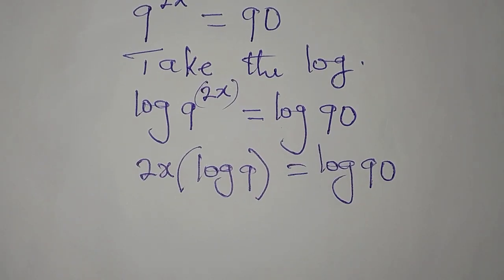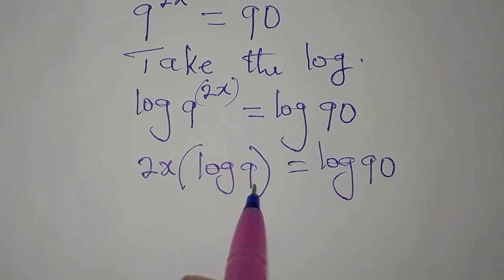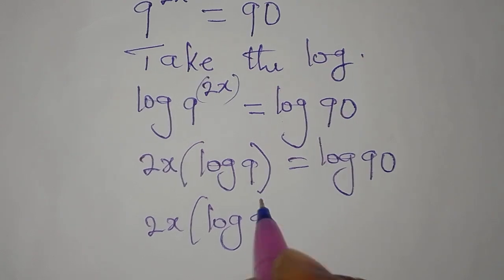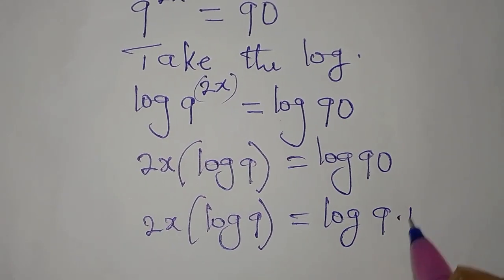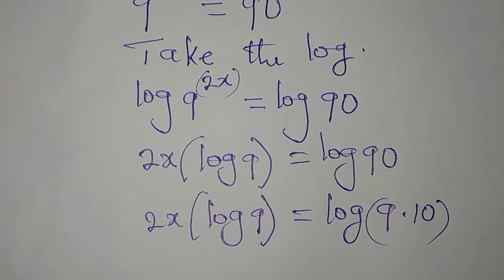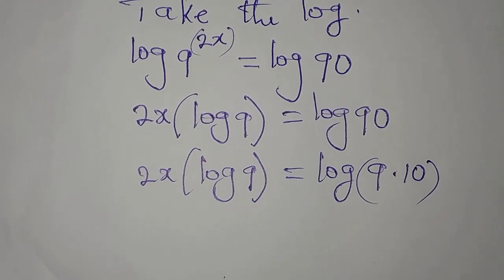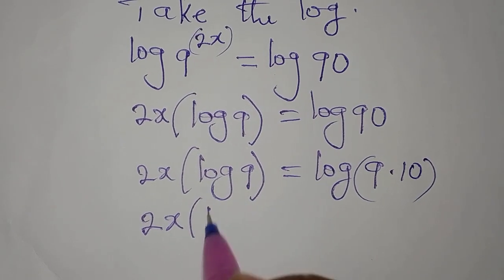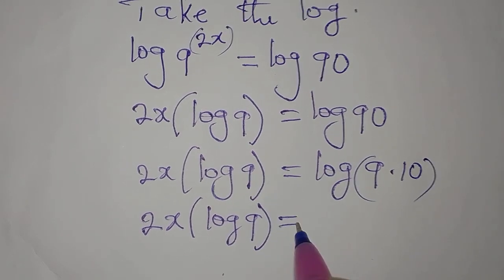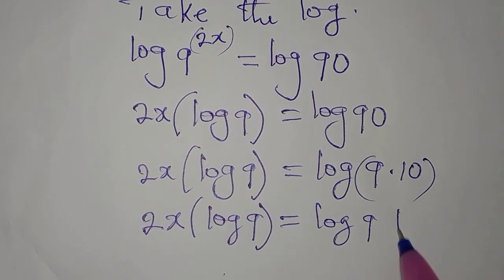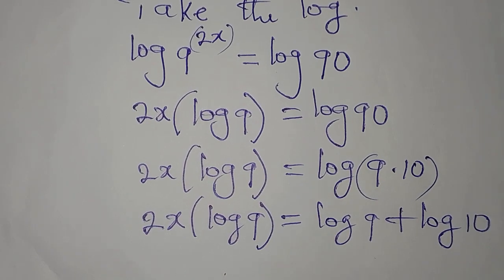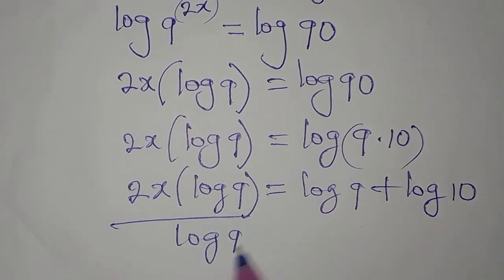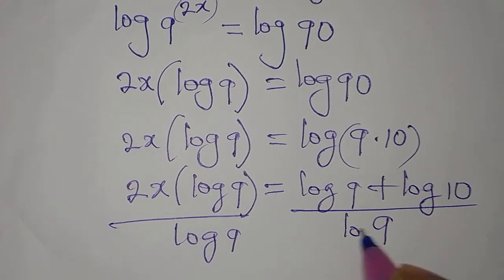We can factor 90 as 9 times 10, so the right side becomes 2x multiplied by log 9 equals log of 9 times 10. Applying the product law of logarithms, this becomes log 9 plus log 10, so we have 2x times log 9 equals log 9 plus log 10.